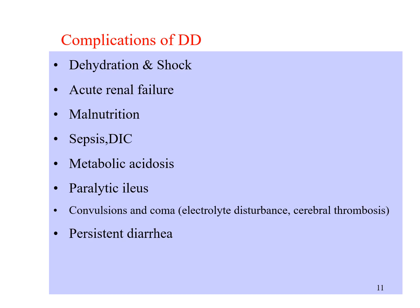The possible complications of diarrhea include dehydration, mainly dehydration and shock, acute renal failure, malnutrition if persistent or chronic, sepsis and DIC, metabolic acidosis, paralytic ileus due to gas produced by bacteria or due to hypokalemia induced by diarrhea, and convulsion or coma due to electrolyte disturbance or cerebral thrombosis. Persistent diarrhea predisposes to many further problems.